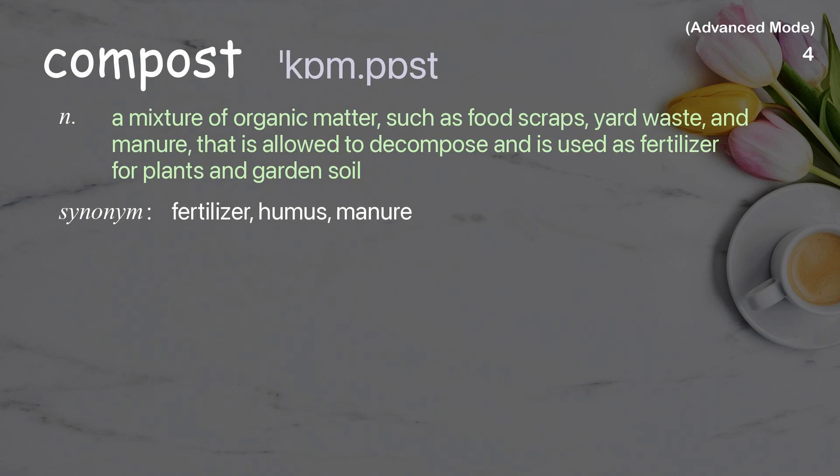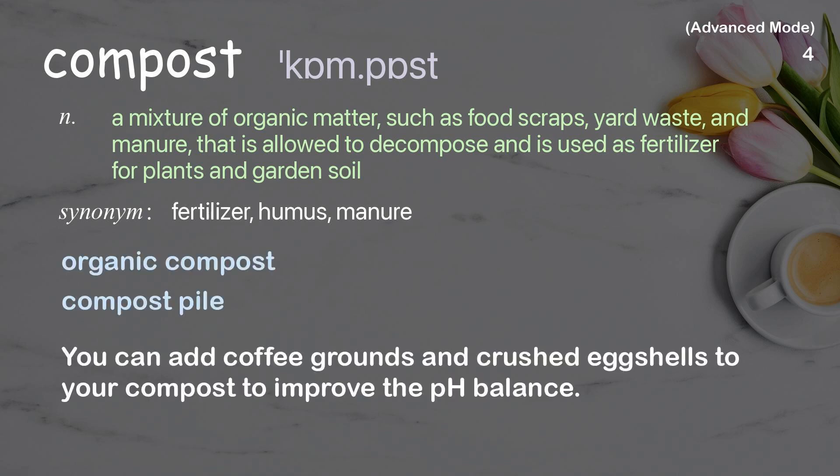Compost: a mixture of organic matter such as food scraps, yard waste, and manure that is allowed to decompose and is used as fertilizer for plants and garden soil. Examples: organic compost, compost pile. You can add coffee grounds and crushed egg shells to your compost to improve the pH balance.